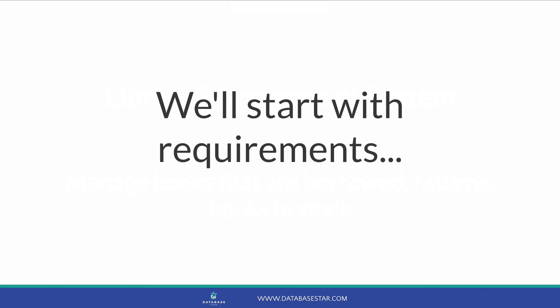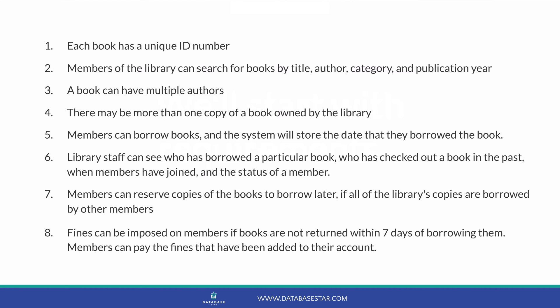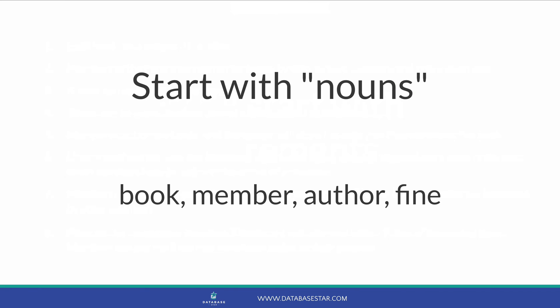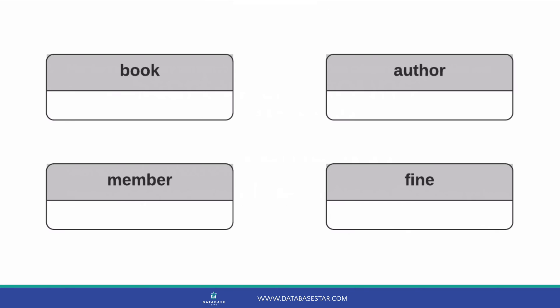We'll start off with a set of requirements. In a real software development team, you will gather these early in the process, and they will get clarified and enhanced as you design the system. I like to start by identifying the nouns in the requirements, which are things. We can look at the requirements and see a few: book, member, author and fine. Each of these would likely be a table in our database. We can start our diagram by placing these items on the diagram.